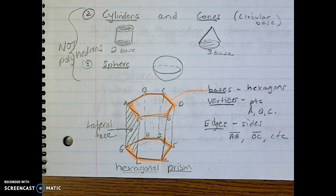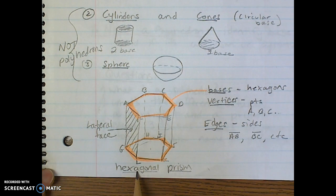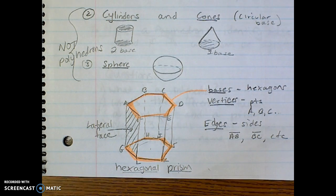Whenever you name a polyhedron, you want to use two words. The first word is going to identify the base, the second word is going to identify if it's a prism or if it's a pyramid.